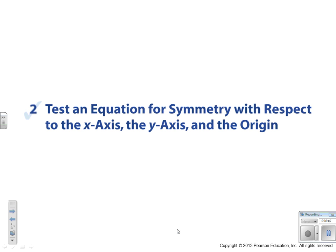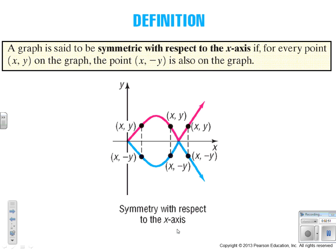To test an equation for symmetry with respect to the x-axis, y-axis, and the origin: a graph is said to be symmetric with respect to the x-axis if, for every point x, y on the graph, the point x, negative y is also on the graph. The way it makes sense to me is, I have an x value here, and it has a matching mirror point across the x-axis. So you'll have a positive y value and a negative y value that correspond with each other.